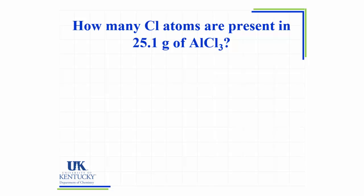Let's look at an example of how we would use this information. Here in this problem, we're given grams of aluminum chloride and we're looking to find how many chlorine atoms we have. So we know we're going to have to start with the 25.1 grams of aluminum chloride because it's the only number we're given in the problem. I can't go from grams directly to atoms; we have to go through moles. This will be a common theme — the first thing we do is we convert to moles. So in order to get from grams of aluminum chloride to moles of aluminum chloride, I'm first going to have to know the molar mass.